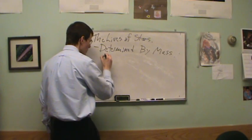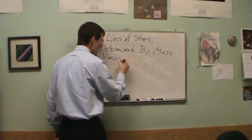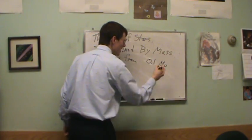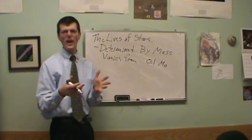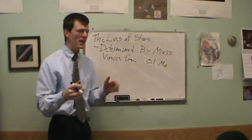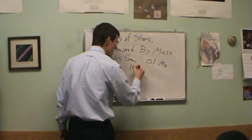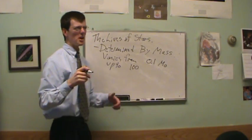So it's all determined by mass, which varies from somewhere around 0.1 times the mass of the Sun. Another number is 0.08 times the mass of the Sun, roughly a tenth of the mass of the Sun up to 100. I think right now the record, the biggest, most massive star detected is somewhere around